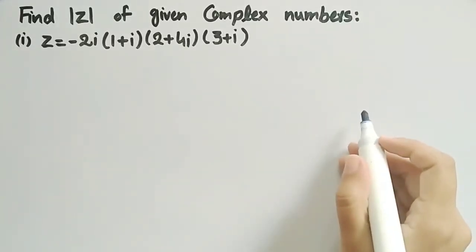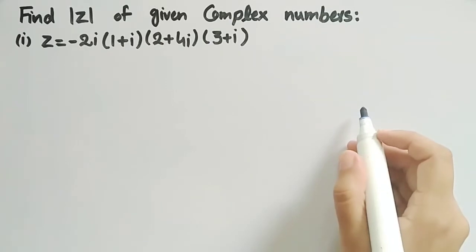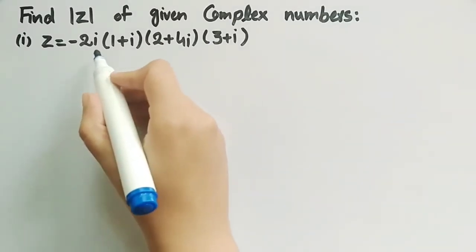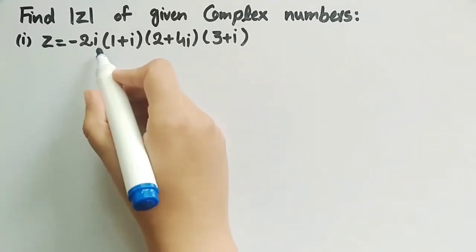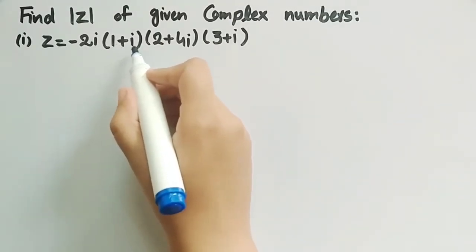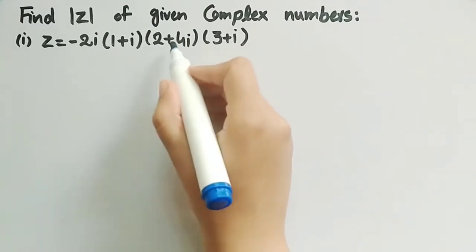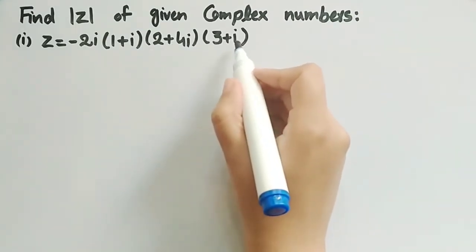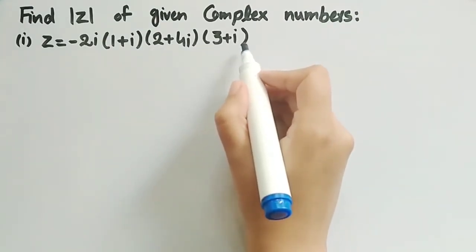In this video, we will find the modulus of the sum of complex numbers. The first complex number is minus 2 iota, multiplied by 1 plus iota, multiplied by 2 plus 4 iota, multiplied by 3 plus iota.